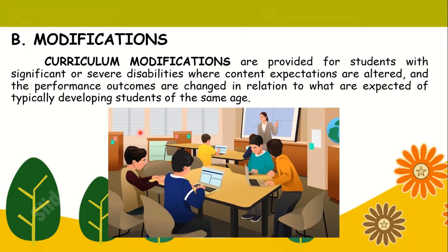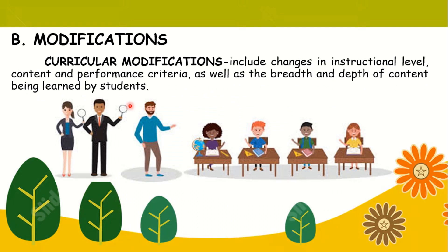In modification, we have curriculum modifications. These are provided for students with significant or severe disabilities where content expectations are altered and the performance outcomes are changed in relation to what are expected of typically developing students of the same age. When instruction and assessment are modified, a student with disability is still given the right to access the same learning opportunities as other students in the general education class, but the tasks are more respectful and appropriate to the student's abilities and needs. Curricular modifications include changes in instructional level, content and performance criteria, as well as the breadth and depth of content learned by students.